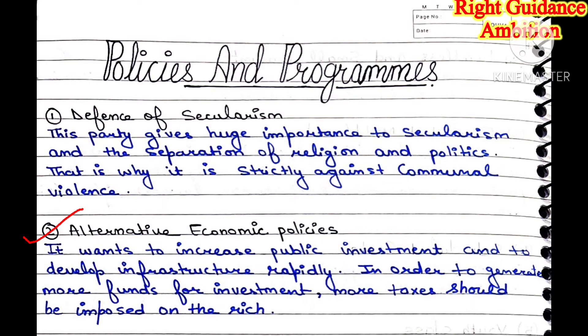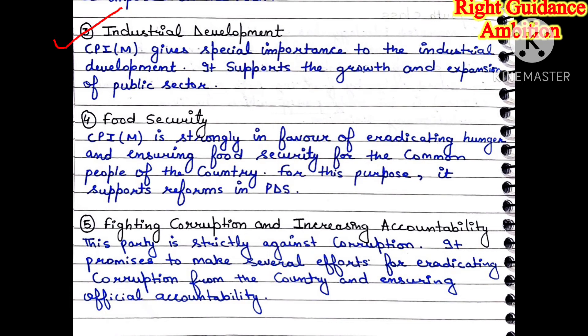Second point is alternative economic policies. People want the government to invest more in the public sector than the private sector so that infrastructure will rapidly develop, because the private sector only invests where it benefits while the government invests for people's development. They say more funds should be given to the government, which can also put more taxes on the rich community. Third point is industrial development. CPIM gives special importance to industry development and says the public sector should grow with time. Fourth, food security. CPIM is in favour of eliminating hunger from India so that people below the poverty line can eat, and the public distribution system should be reformed if there are any weaknesses.